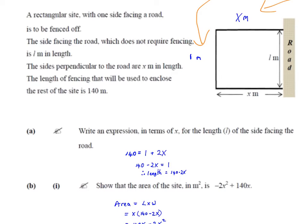Part (a) says write an expression in terms of x for the length l of the side facing the road. First thing I would do is work out what the formula would be for getting 140 meters. You'd say 2 times x plus 1 times l would give you 140. So 140 equals l plus 2x. From there you want to get l in terms of x, so l on its own. Bring the 2x across, and it becomes l equals 140 minus 2x.